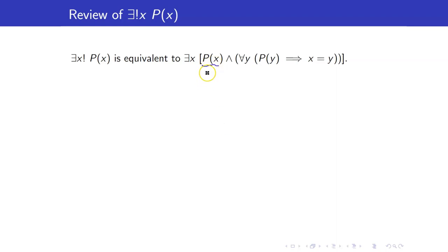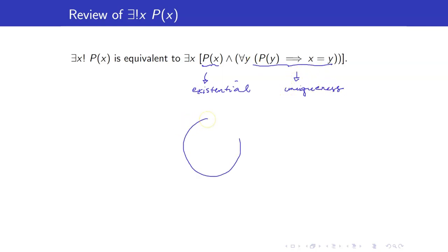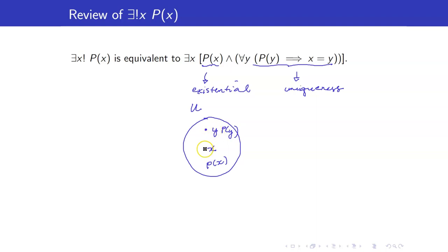This part is the existential part, and this part is the uniqueness part — meaning if this is our domain, we can find an x such that P of x is true, and if there is another y for which P of y is true, this y must coincide with x, so that there will only be one value for which P of x is true.